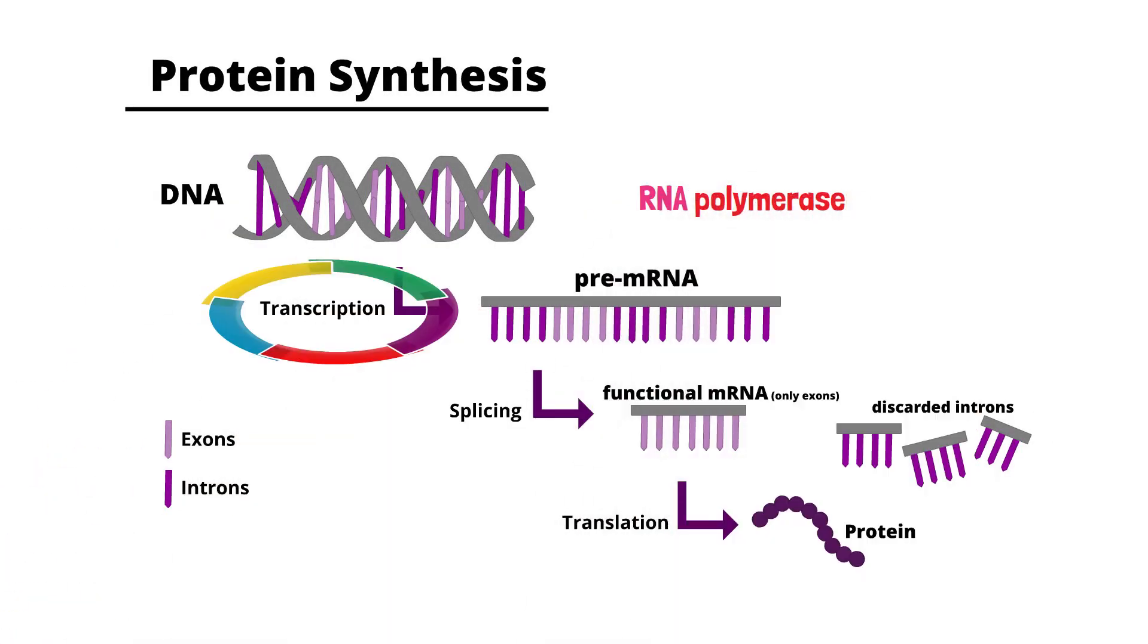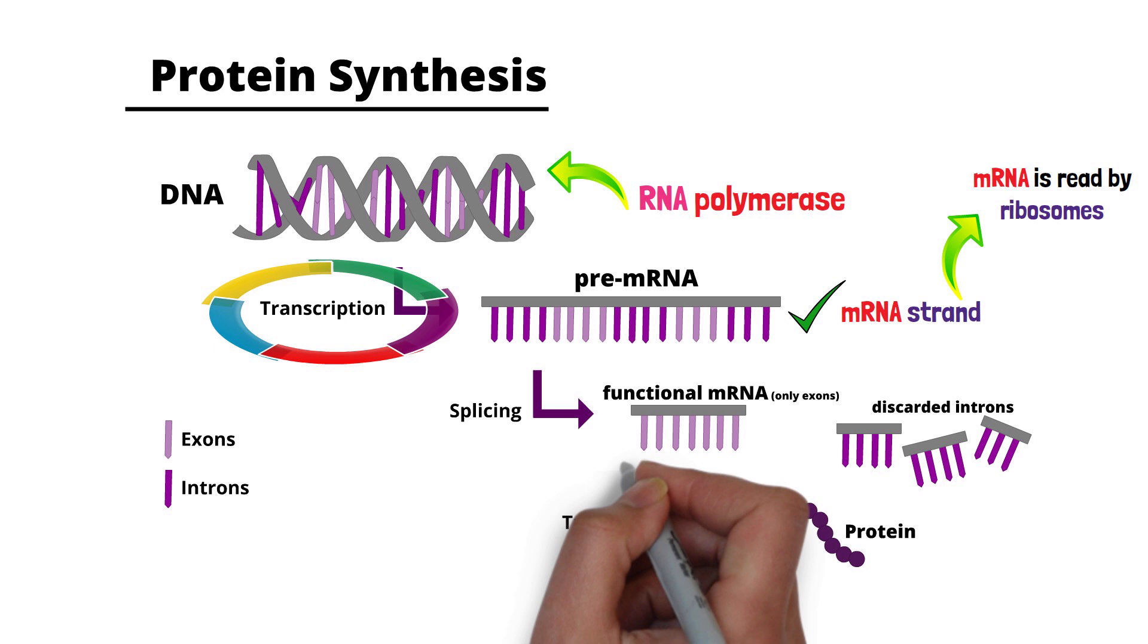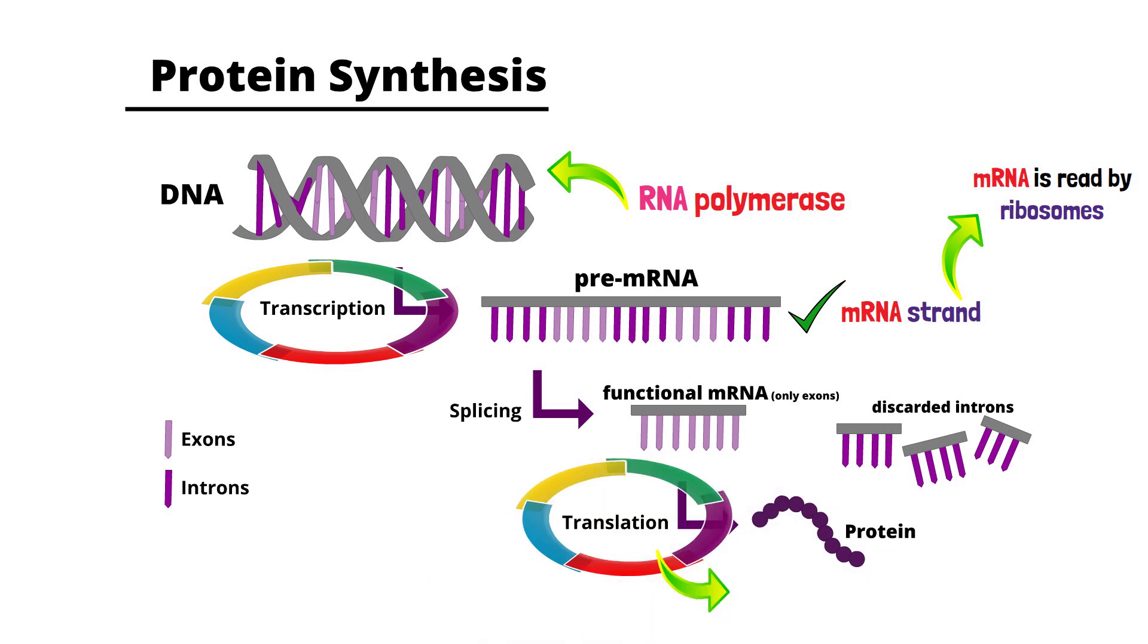In transcription, RNA polymerase unzips a portion of the DNA, synthesizing a complementary mRNA strand. During translation, this mRNA is read by ribosomes, and tRNA molecules bring the appropriate amino acids, forming a protein. This intricate dance of molecules is the physical manifestation of the genetic code.